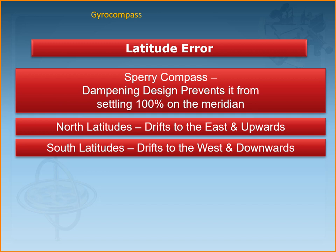In some gyro compasses a manual or automatic input of latitude compensates for the error. On many ships the master gyro compass is located in a dedicated room where you can input the latitude based on the vessel's current position. The manual latitude setting does not have to be exact — it can be within two to three degrees. You must also ensure that if the gyro compass can take input directly from GPS or a similar receiver, that connection is initialized correctly.